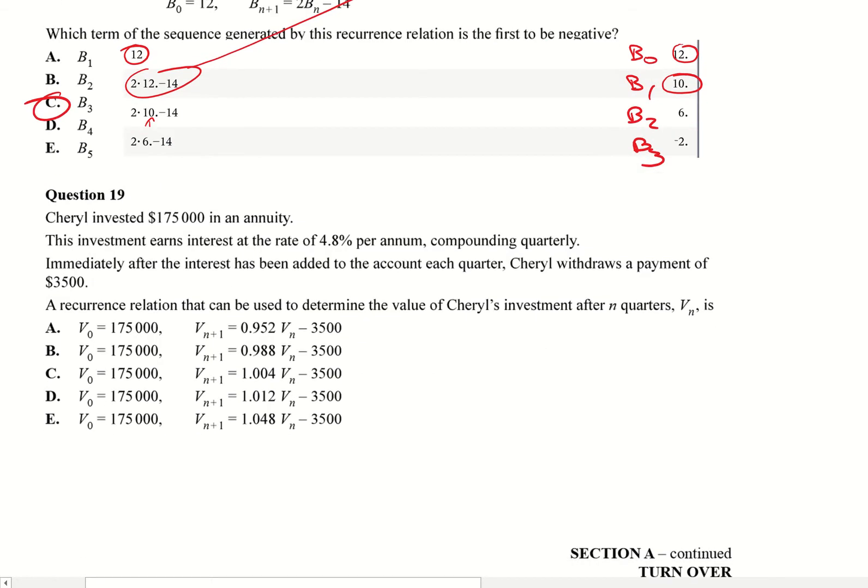Okay, now Cheryl invested $175,000 in an annuity. This investment earns interest at a rate of 4.8% per annum compounding quarterly. So interest rate is 4.8, this is your payments per year, it equals four. Immediately after interest has been added to the account, she withdraws a payment of $3,500.